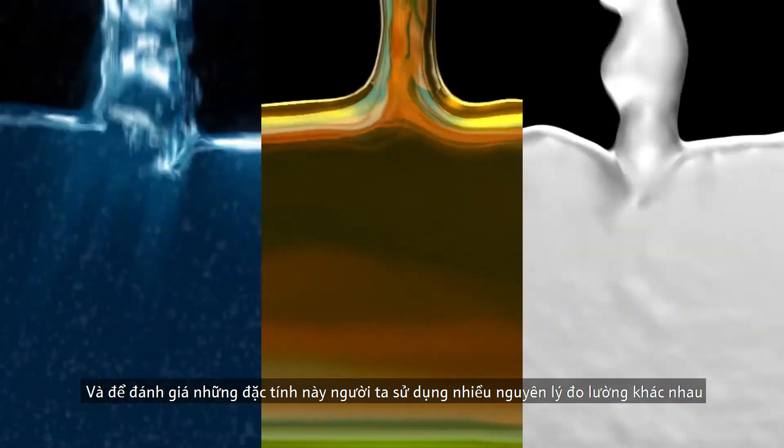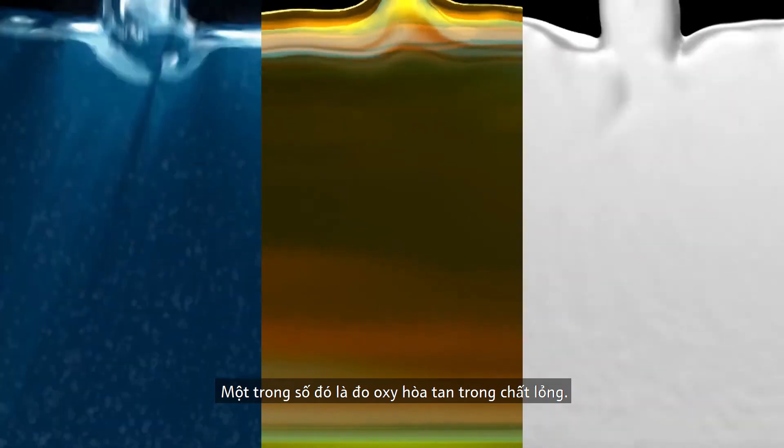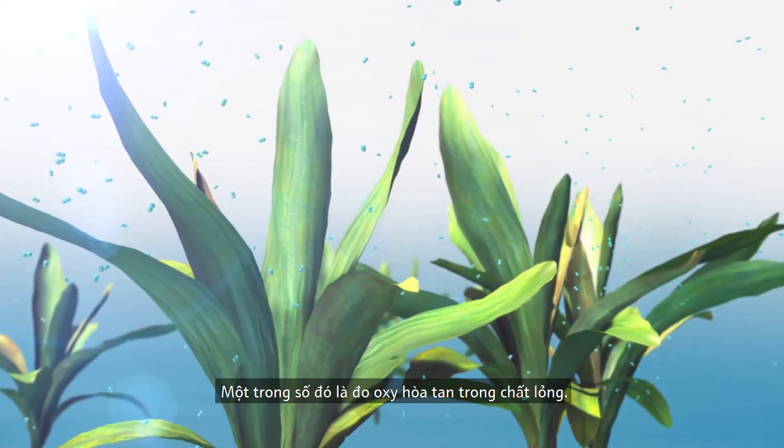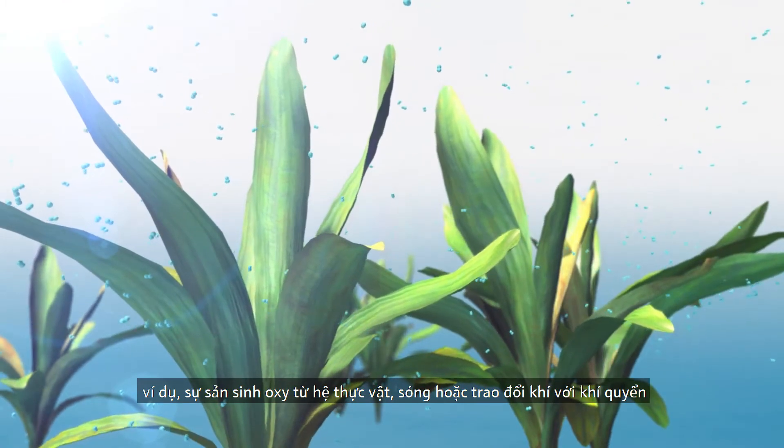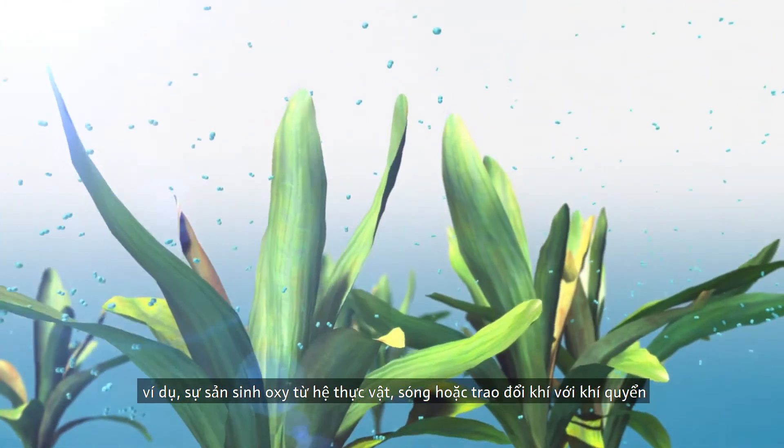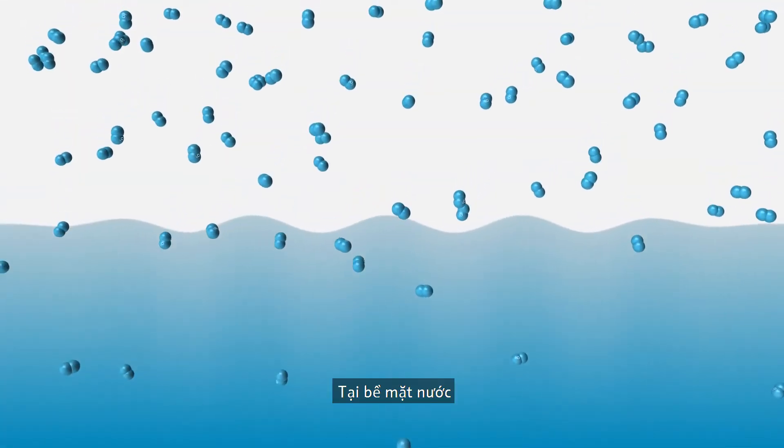One of these principles is the measurement of dissolved oxygen in liquids. Oxygen penetrates liquids in different ways, for example via oxygen-producing plants, waves, or gas exchange with the atmosphere at the water surface.